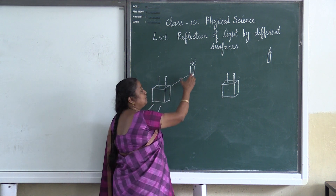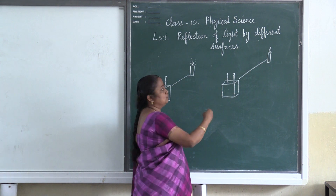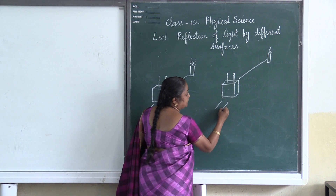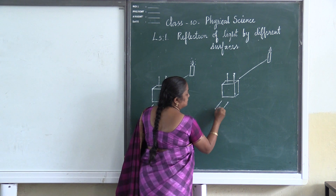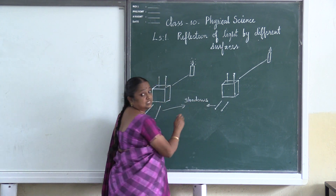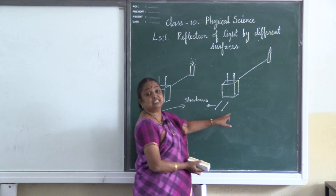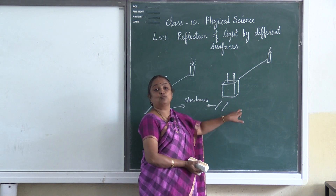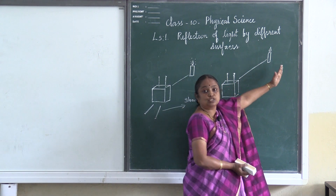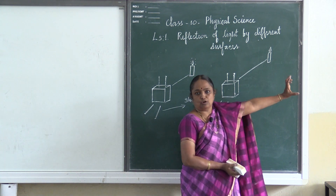Observe the distance between the source of light and the object in each case. When the source of light is further away, the shadows of the two pins are now parallel to one another — we see a parallel beam of light rays. So what is our conclusion? If we want to get a parallel beam of light rays, the source of light should be far away from the object, and the intensity of the source should also be more. Thank you.